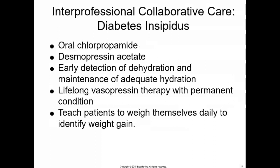Quick review: diabetes insipidus involves a problem with the posterior pituitary gland and antidiuretic hormone. With DI, ADH is too low, or it is present but the kidney is not responding to it — not enough ADH doing its job. Signs and symptoms include polyuria with increased urine output, dilute urine being excreted, and signs and symptoms of dehydration.